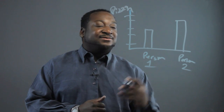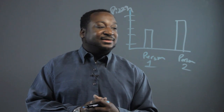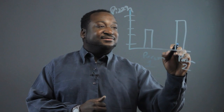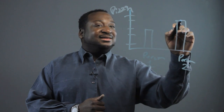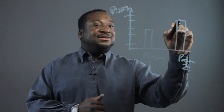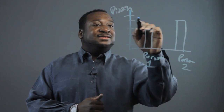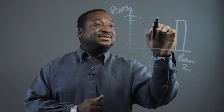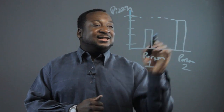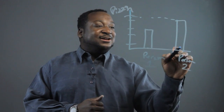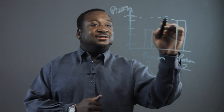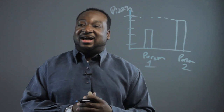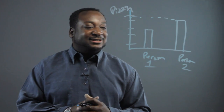Now to read person number two, I'll just look at its bar and it goes up to five. So this lets me know that person number two had five slices of pizza.